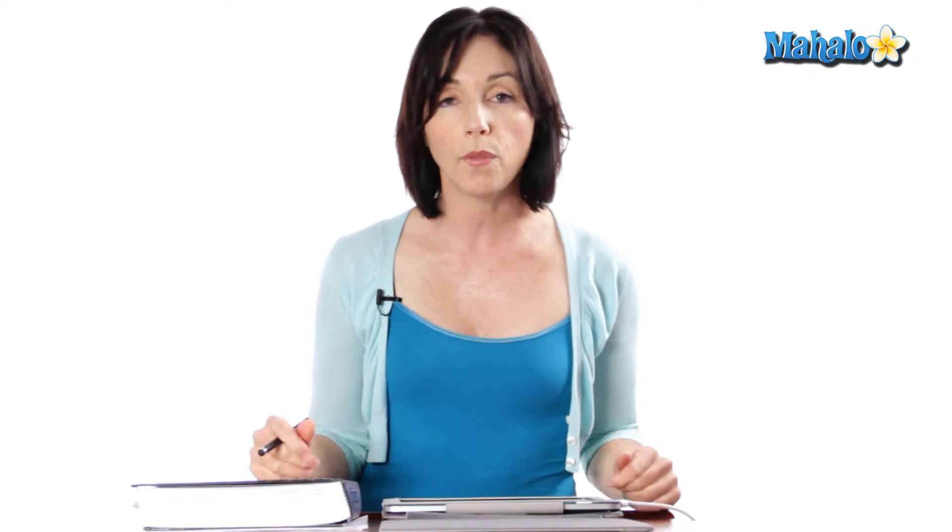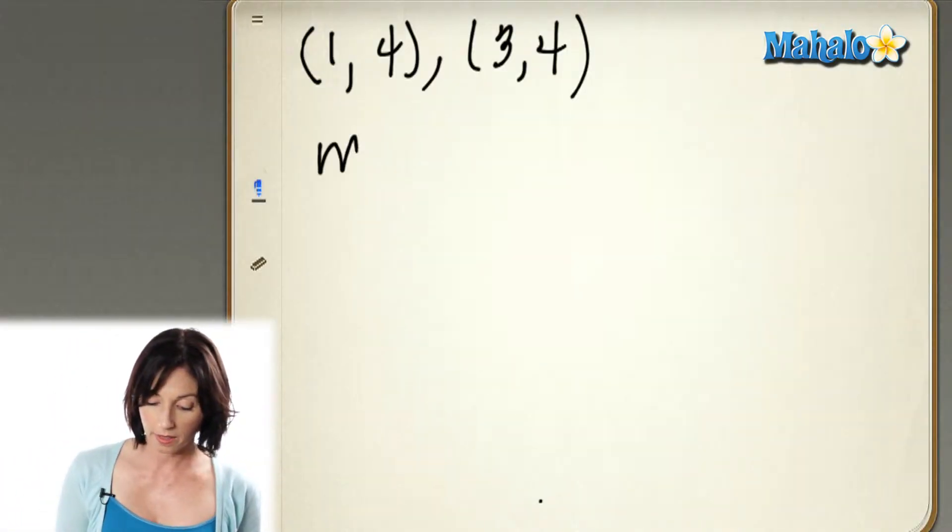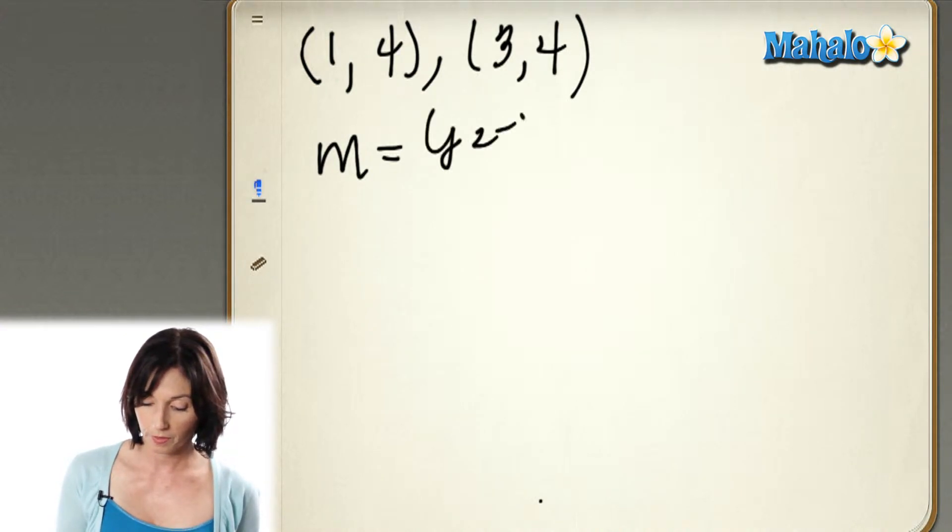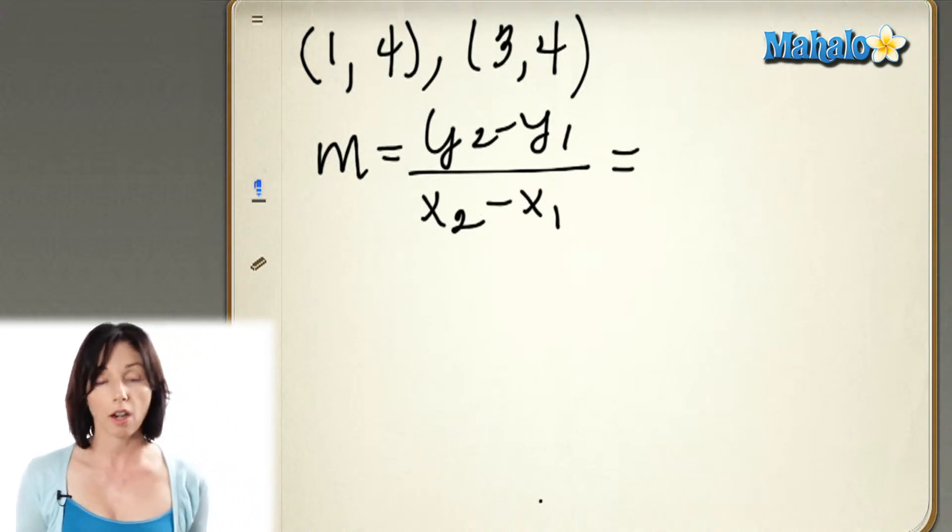Let's look at the points (1,4) and (3,4). Now, slope is the difference in the y-coordinates over the difference in the x-coordinates.